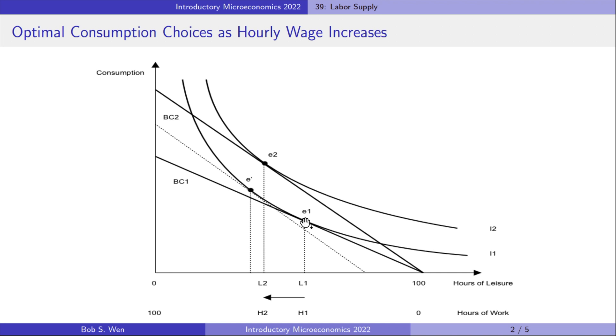The movement from E1 to E prime is the substitution effect. The opportunity cost of leisure increases as the hourly wage increases. Amy chooses to consume less leisure because it becomes more expensive.